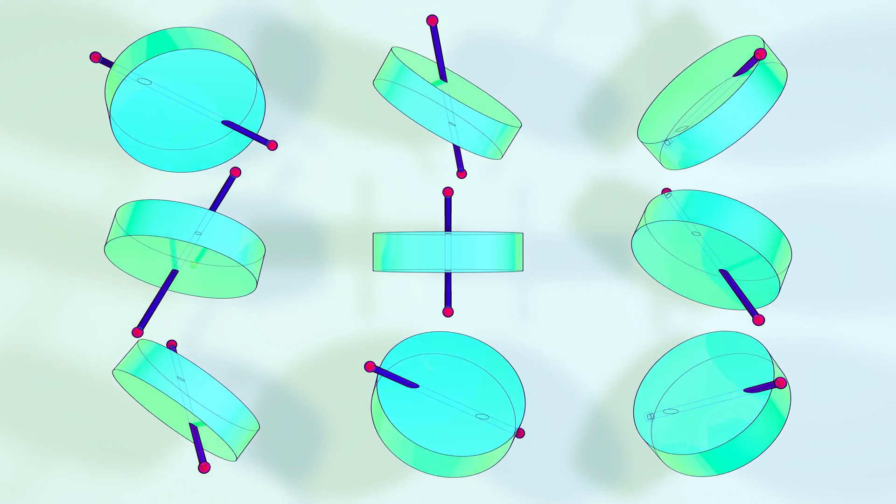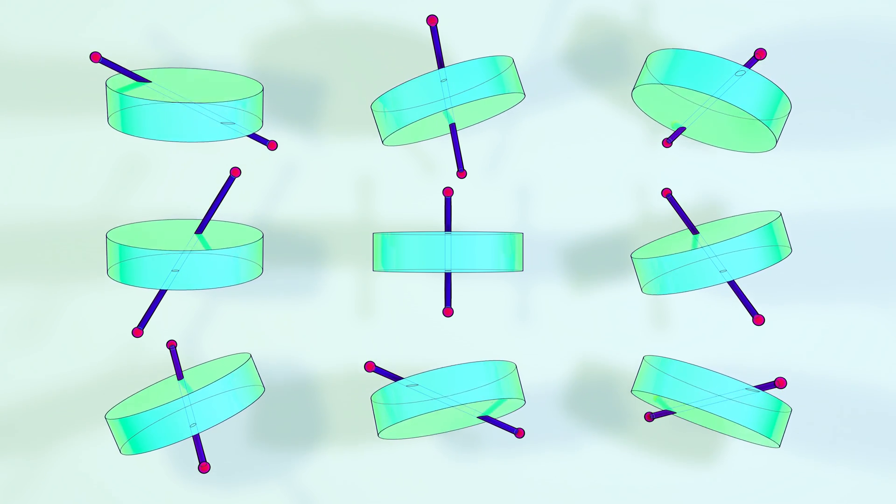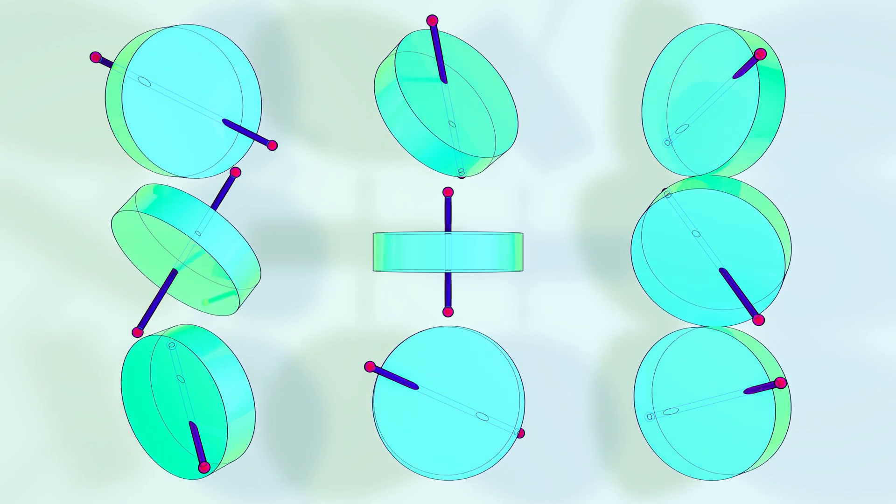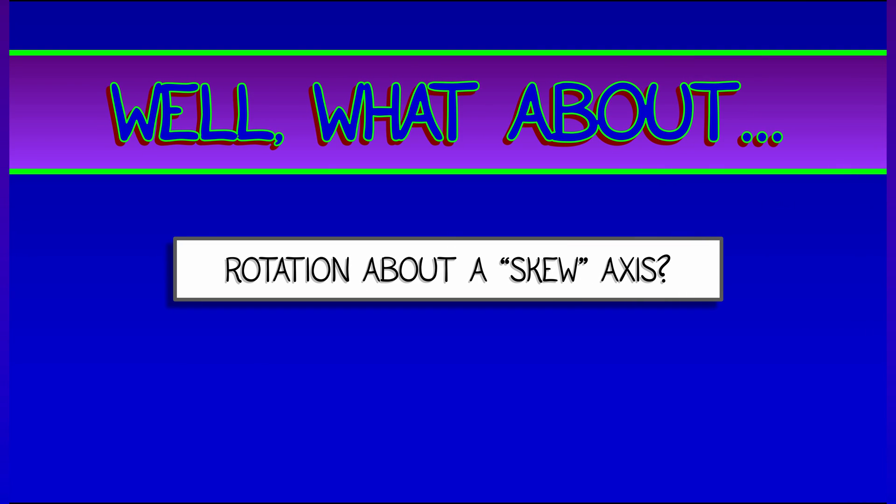Ooh man, that looks difficult! I mean, think about it. If I wanted to set up the moment of inertia about that axis, I would have to figure out the r squared and then integrate that, and the limits of integration on that would just be a nightmare.